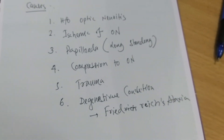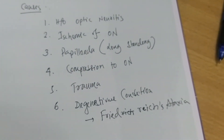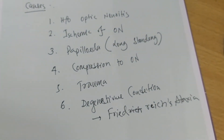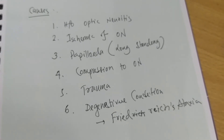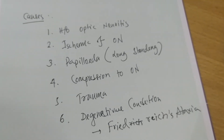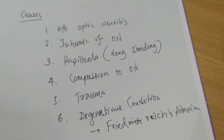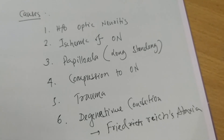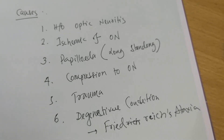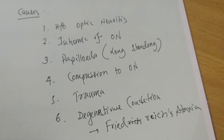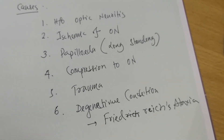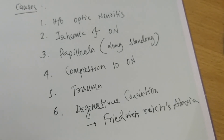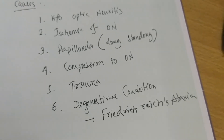To summarize, the six causes of optic atrophy are: history of optic neuritis, ischemia of the optic nerve, long-standing papilloedema, compression of the optic nerve, trauma, and degenerative conditions like Friedreich's ataxia.